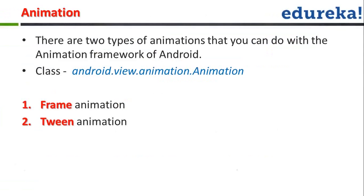The agenda today is to continue from where we left off last time — animations in Android. There are two types of animation supported: frame animation and screen animation. Frame animation is when you have a sequence of frames as images, like images of an apple, orange, and mango, and you want to play them in a video format. You put those frames in a sequence and let them play one by one, so it more or less pretends to be a video playing in front of you. That's the beauty of frame animation — it's really quick and quite fast.